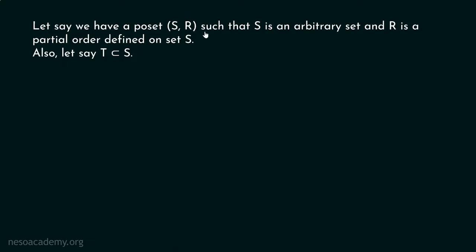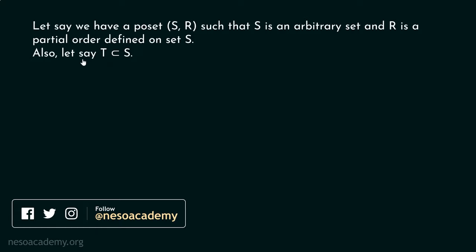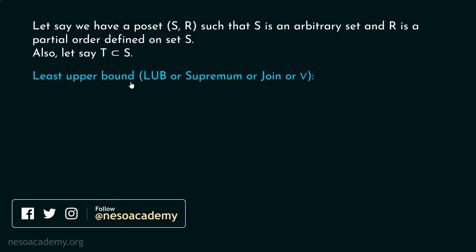Let's say we have a poset S comma R, such that S is an arbitrary set and R is a partial order defined on set S. Also, let's say T is a subset of set S. Some T exists which is nothing but a subset of set S. Now, we will try to understand what is least upper bound. Sometimes we represent least upper bound by LUB. This is a shorthand notation for least upper bound. Or sometimes we call this supremum or join.